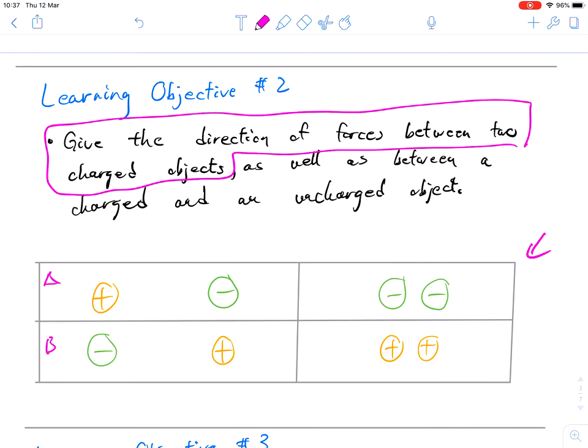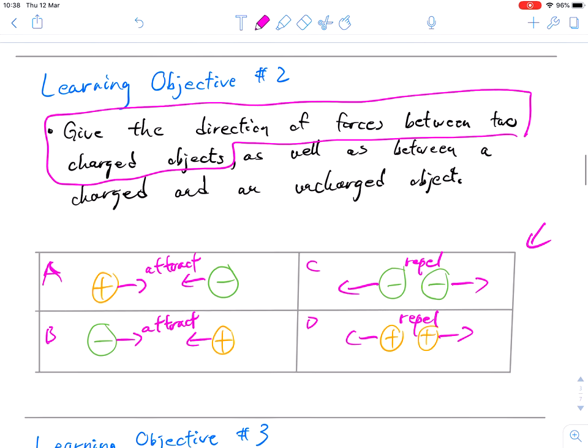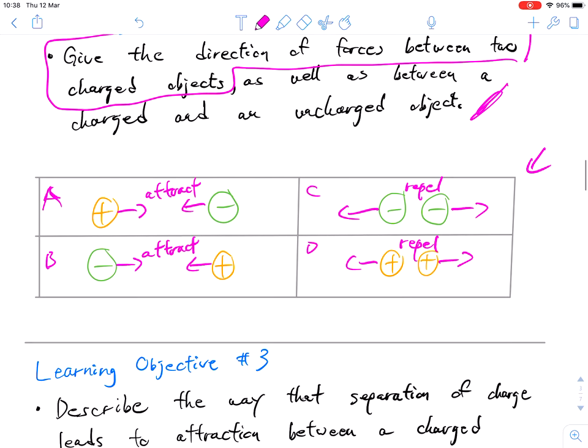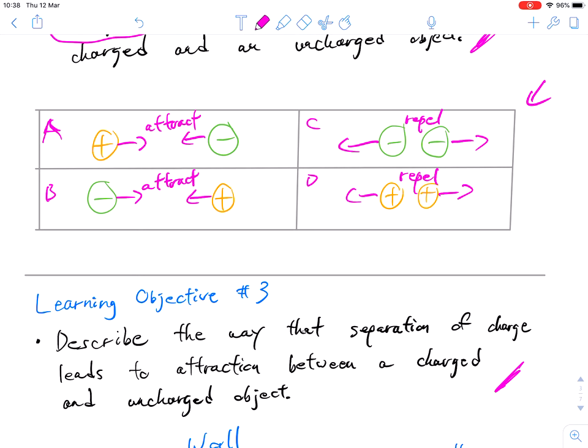We want to be able to give the direction of forces between two charged objects, as well as between a charged and an uncharged object. So let's first look at this table here below. We've got four different windows. These guys are going to exert an attractive force on each other. These guys are also going to exert an attractive force. And these guys are going to repel each other. And likewise, those guys are going to repel.